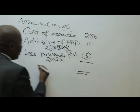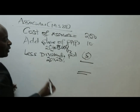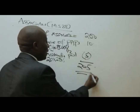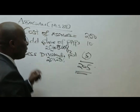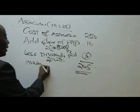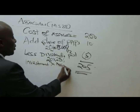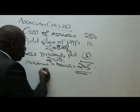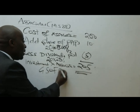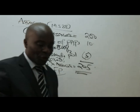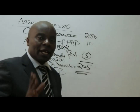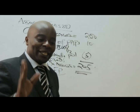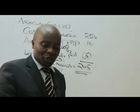So the value of the investment in associate at the end of the year is $200M + $10M − $5M = $205 million. This $205 million is what goes to the group statement of financial position. Thank you very much, ladies and gentlemen. I look forward to you watching more videos in the future — please subscribe to this channel.